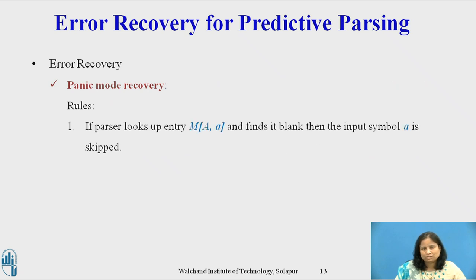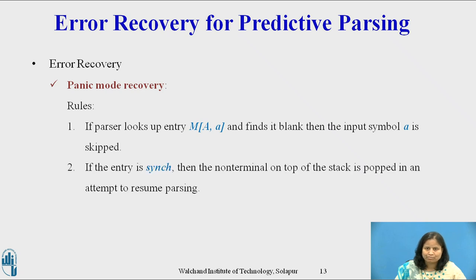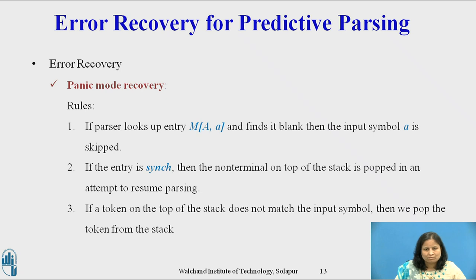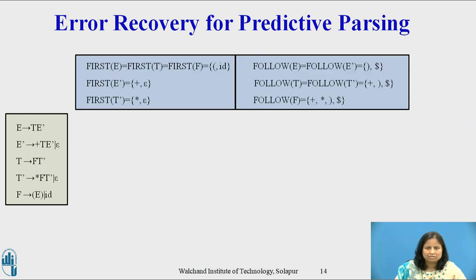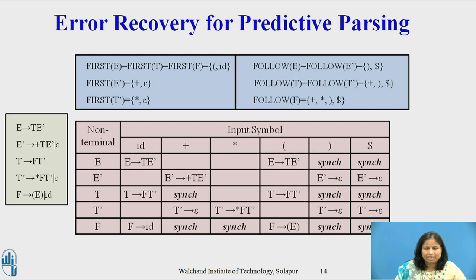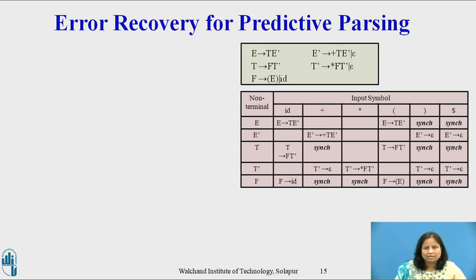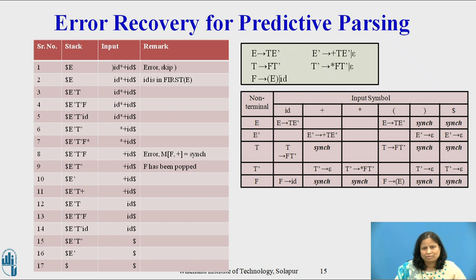In panic mode recovery, we use the follow symbols as synchronizing tokens and use 'sync' in the predictive parsing table to indicate synchronizing tokens obtained from the follow set of the non-terminal. Rule 1: if the parser looks up entry M[A, a] and finds it blank, then the input symbol is skipped. Rule 2: if the entry is sync, the non-terminal on top of the stack is popped. Rule 3: if a token on top of the stack does not match the input symbol, we pop the token from the stack. Consider the grammar for arithmetic expressions with the parsing table containing sync entries for error recovery.